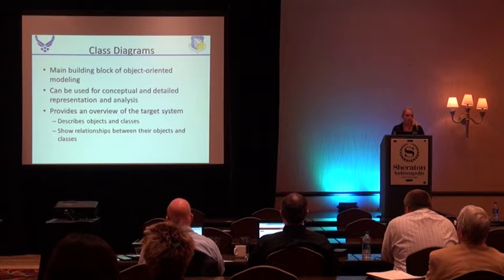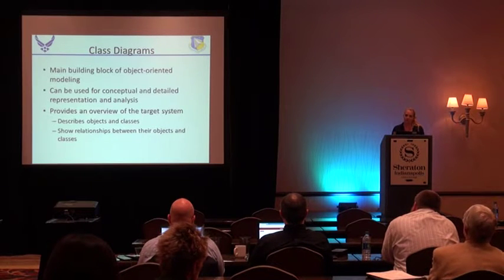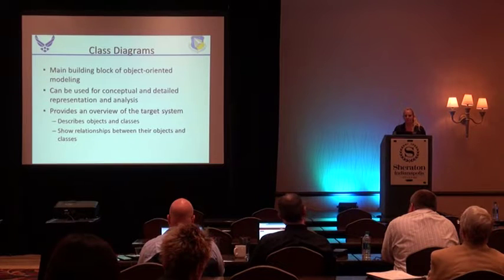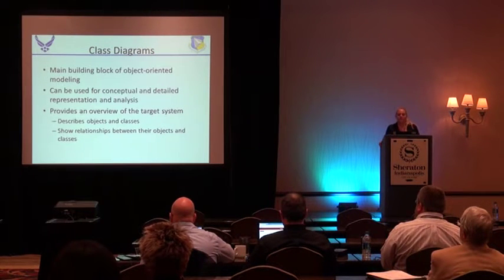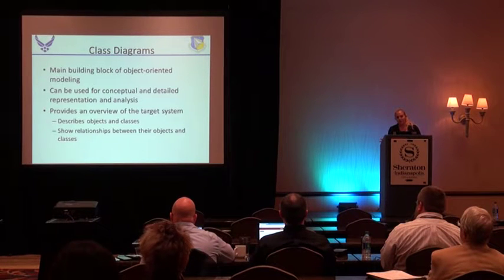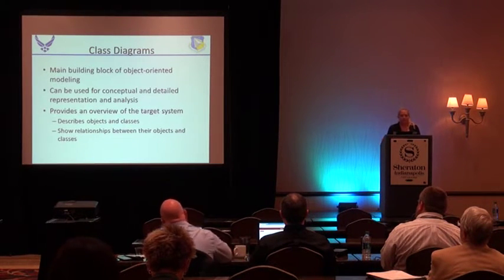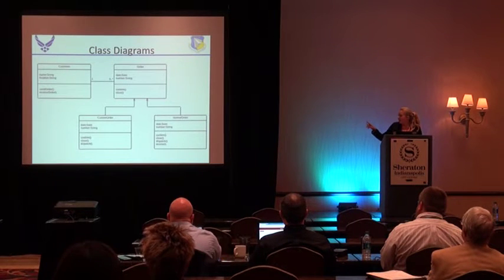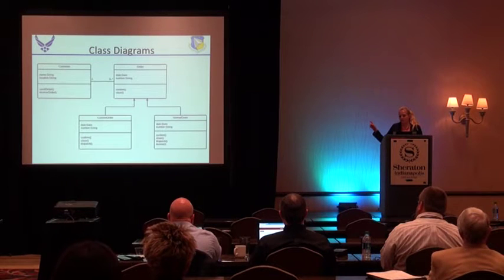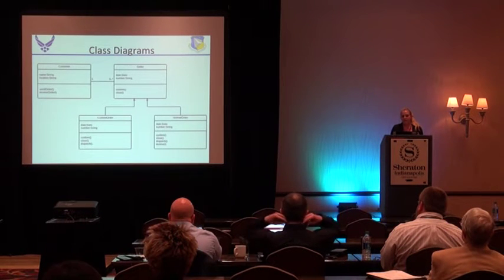Once you have your use case and your wireframe, you can create a class diagram — though you do not need them in order to create one. A class diagram is the main building block of object-oriented modeling; it can be used for conceptual and detailed representative analysis, and it's a great way to get an overview of how the system will work. Here's an example: order is the abstract class, and customer and normal orders are the concrete classes. You can only have a custom order or a normal order for an order, and an order must have at least one customer, but a customer doesn't have to have an order. Elements like name, location, date, and number are all attributes within a class.